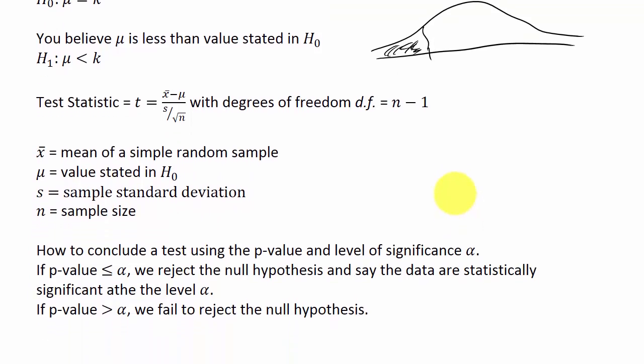So how do we conclude the test? To conclude a test using p-values, if the p-value is less than or equal to alpha we reject the null hypothesis and say the data are statistically significant at the level alpha. If the p-value is greater than alpha we fail to reject the null hypothesis.